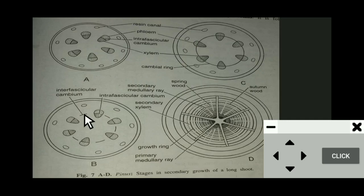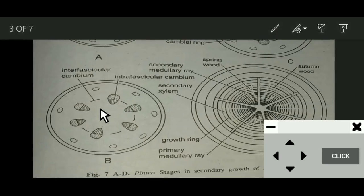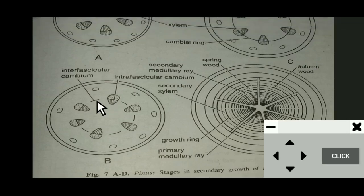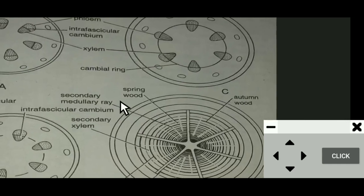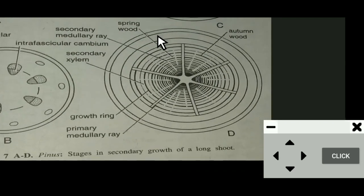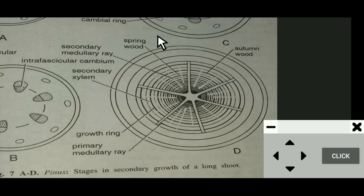In the second stage, the interfascicular cambium joins with the intrafascicular cambium — which is the cambium strip present between the xylem and phloem within the vascular bundles — and together they form a complete cambium ring.